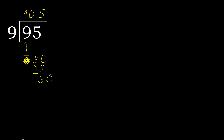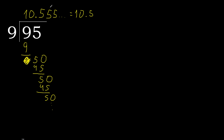Complete: 50. 9 multiplied by 5 — subtract. The decimal point is here. This gives a repeating digit: 5 repeating. So 95 divided by 9 equals 10.5 repeating.